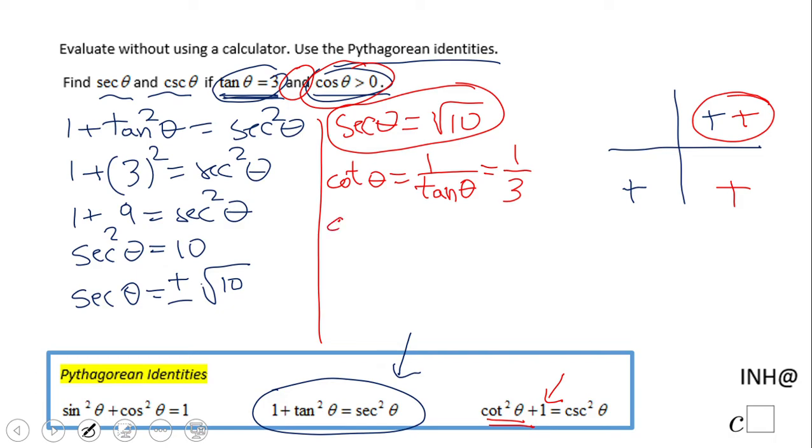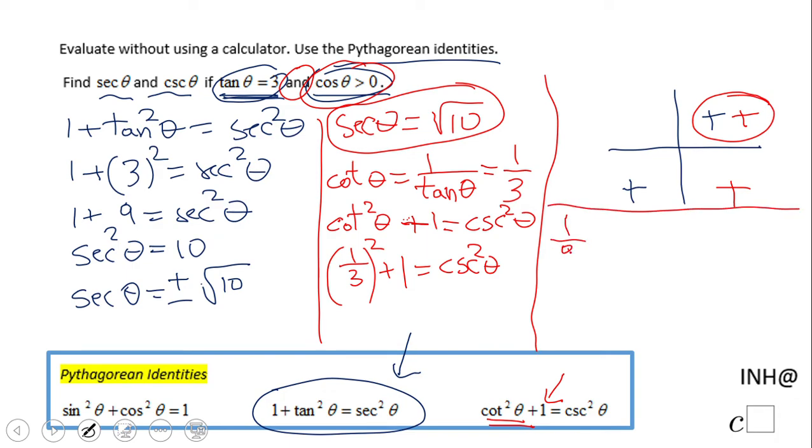Now we're gonna use this Pythagorean identity: cot²θ + 1 = csc²θ. So we have (1/3)² + 1 = csc²θ. So we have 1/9 + 1 = csc²θ.